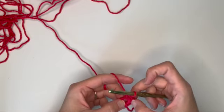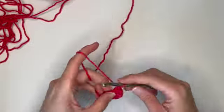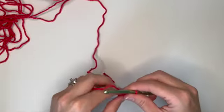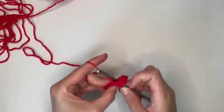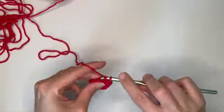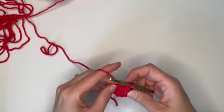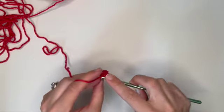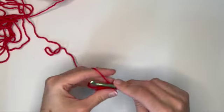One, two, three, four... Okay, 12. And then to join our circle we're going to make another slip stitch into that first chain space.